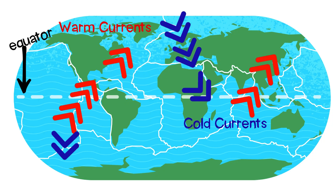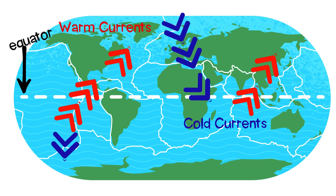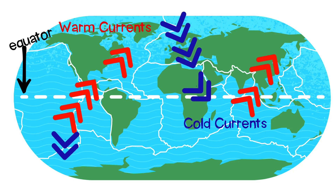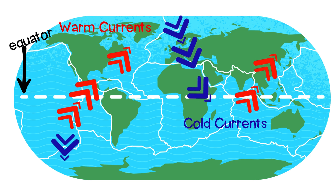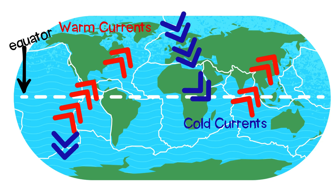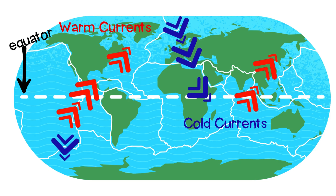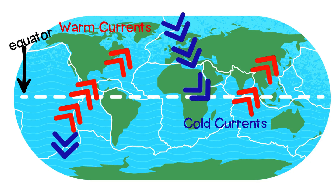In this image, you'll see cold and warm currents. The sun's uneven heating creates wind and ocean currents. Warm water from the equator travels toward the poles, while cold water moves back down. These currents act like a conveyor belt, redistributing heat across the planet and influencing weather patterns everywhere, from tropical rains to icy winters.